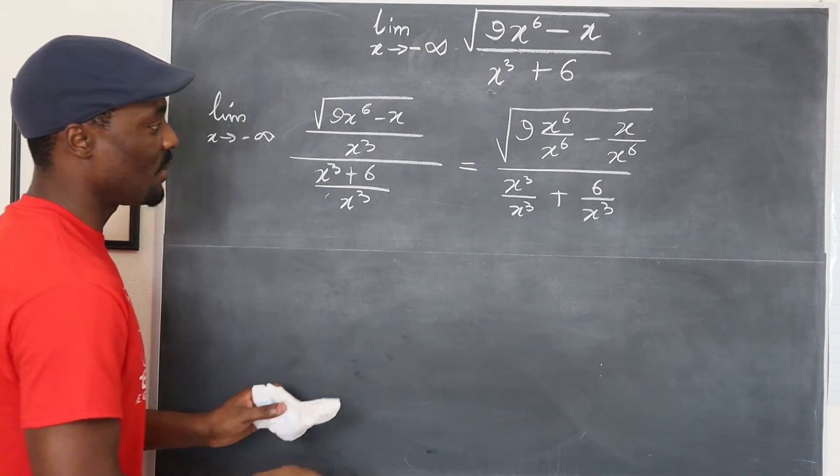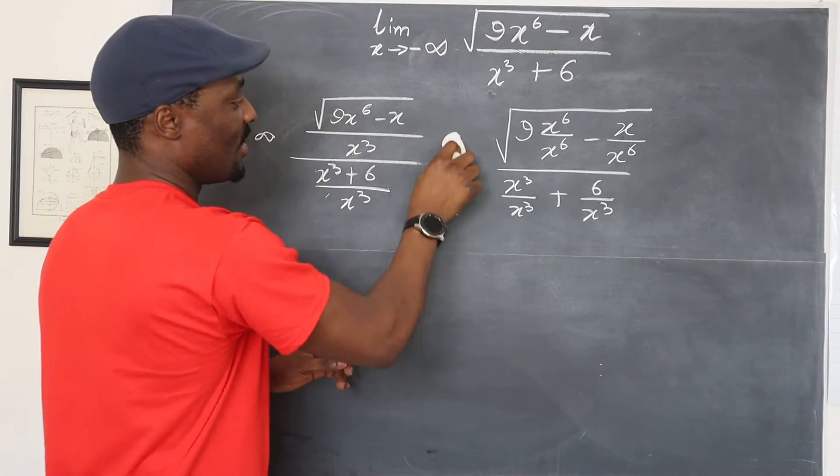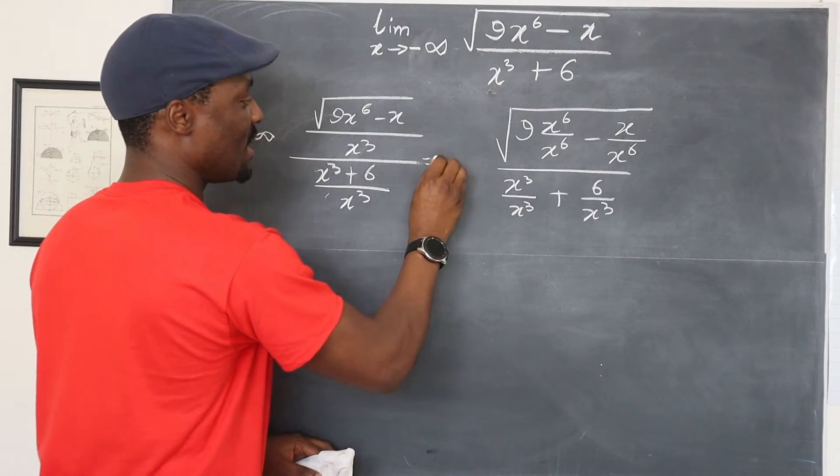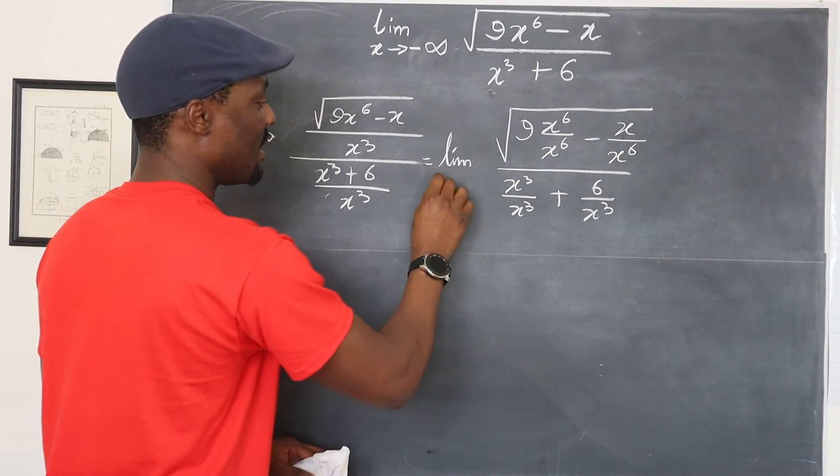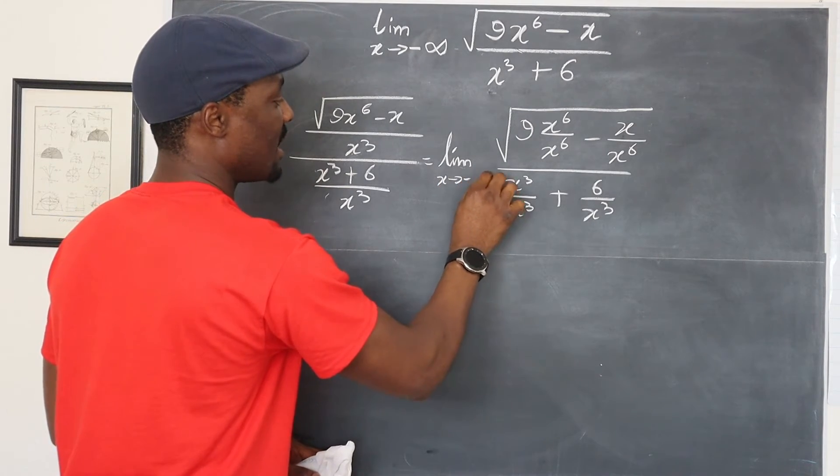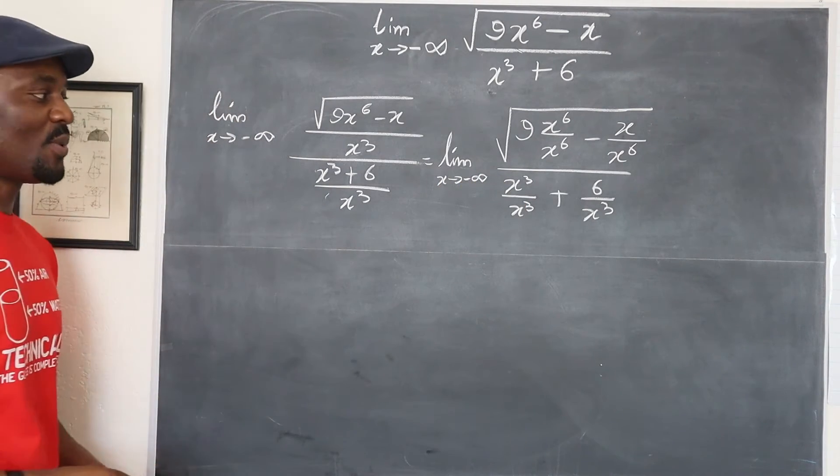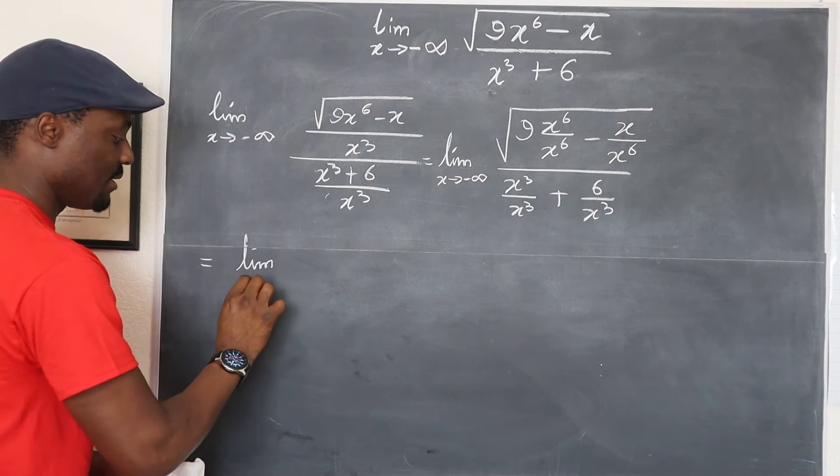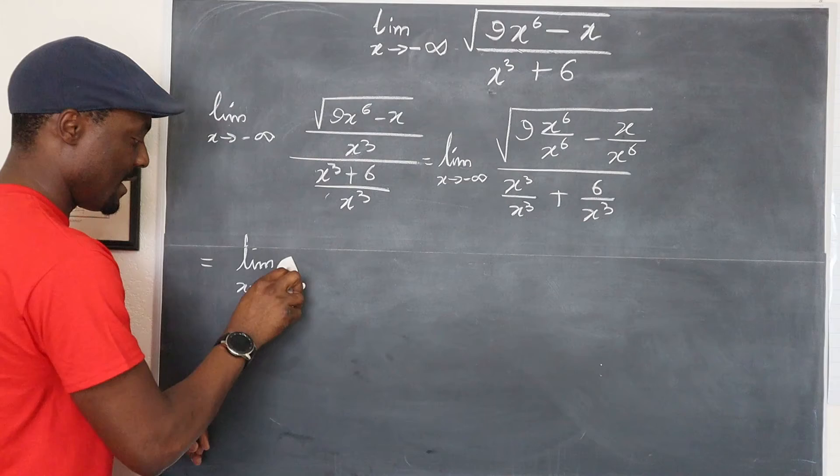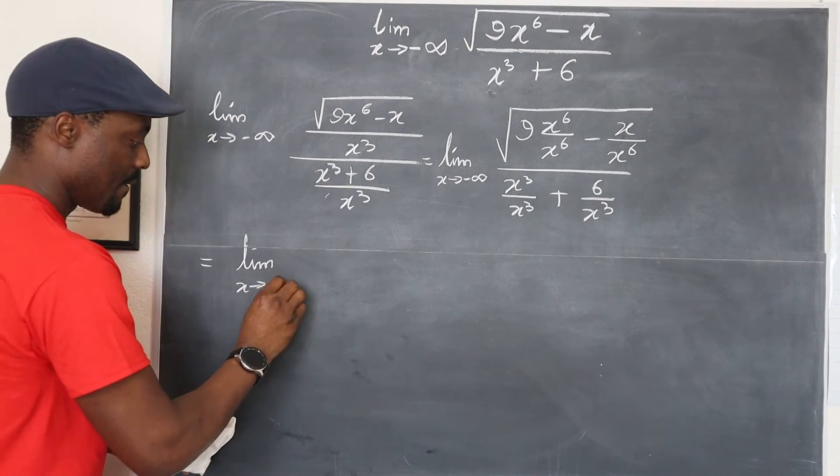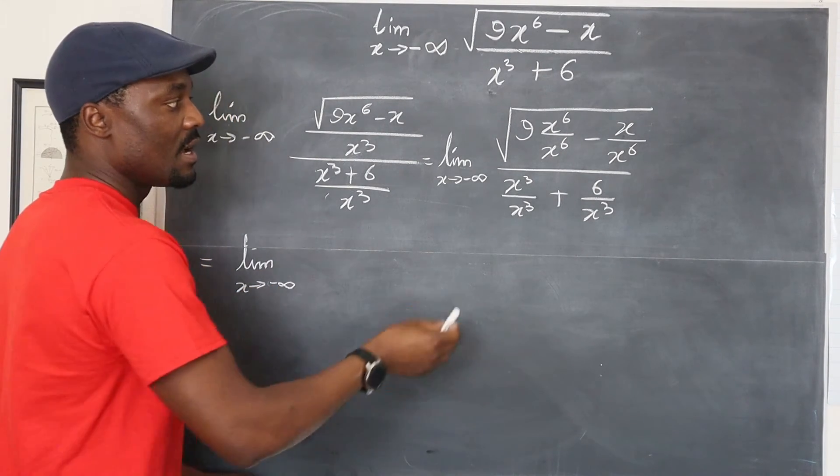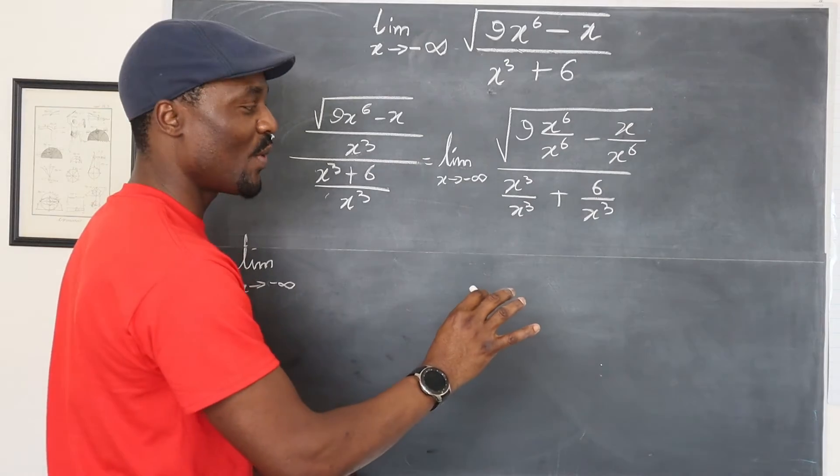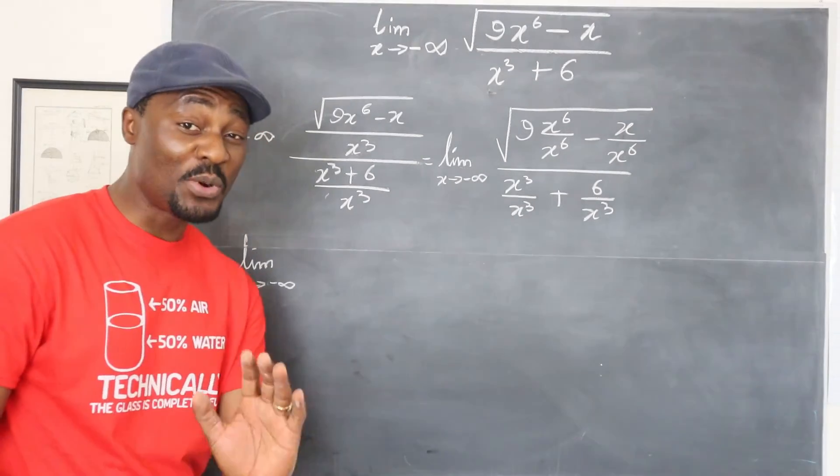Oh I forgot to write the limit sign. Well don't ever forget that. This will be equal to the limit of x as it approaches negative infinity. Don't forget to write that. So at this point it's going to be the limit of x as it approaches negative infinity of, this is where you need to be super careful.